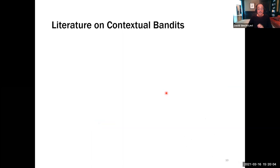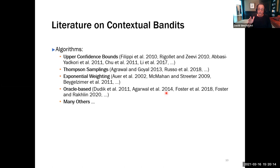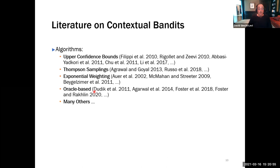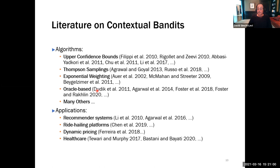The literature on contextual bandits is huge, covering research from CS to statistics to OR to economics. Algorithms include UCB and Thompson sampling — Thompson sampling is interesting as the original paper was written in the early 1930s focused on clinical trials, and only in the last 20 years have people recognized its efficiency. Also exponential weighting, oracle-based algorithms, and the like. There are also many papers on applying these technologies in recommendation systems, ride sharing, dynamic pricing, and healthcare.